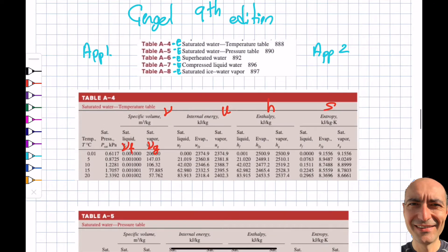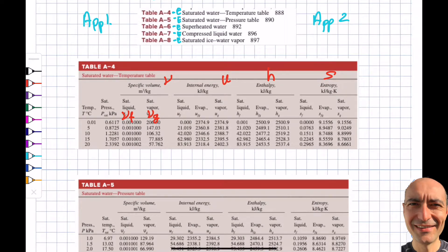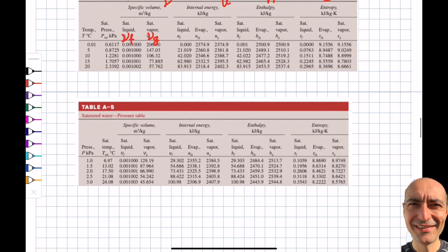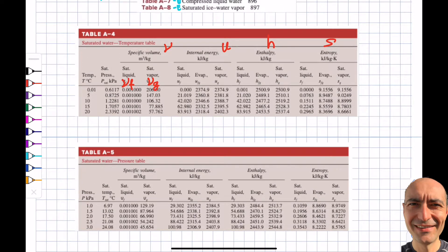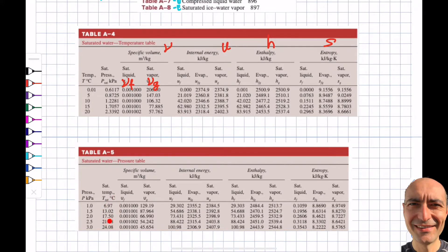Table A5 covers the same information but is listed by pressure rather than temperature. If a problem gives you a pressure like 2 kPa that isn't listed, you can use interpolation. A5 exists for convenience — everything in it can in principle be found from A4, but it saves time.